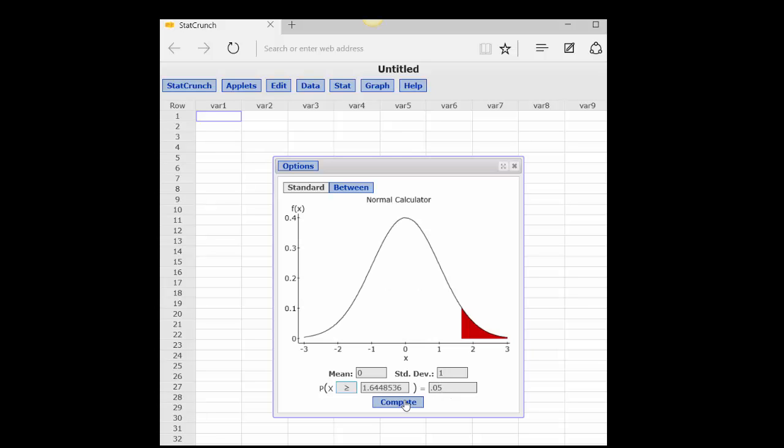And we get a critical value of z of 1.648, rounding out to three places, 1.645. I think you've heard that before.